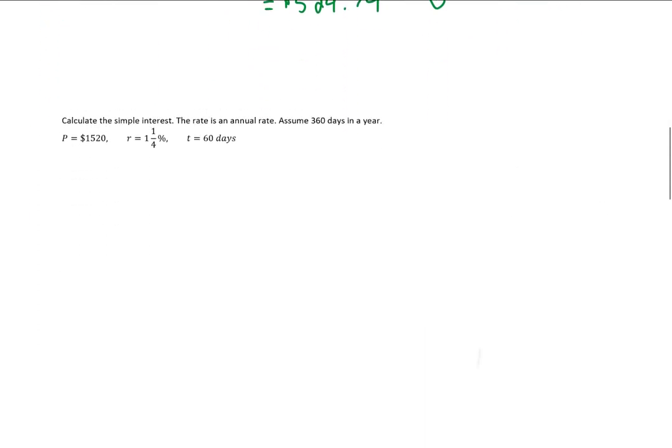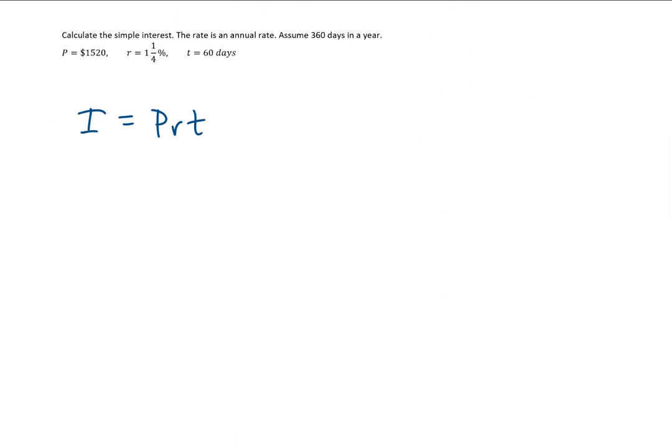Let's do another example that turns out to be slightly more complicated. We're going to use the simple interest formula again. The rate is an annual rate, but this time it's given in a slightly different form. Another complication in this problem is that our time is given in days, but we really want our time to be measured in years because this is an annual rate.